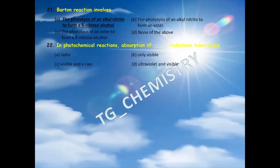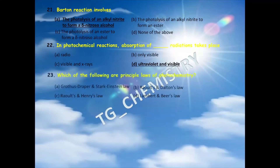Twenty-second question: in photochemical reactions, absorption of which type of radiation takes place? Options: A) radio waves, B) only visible, C) visible and X-rays, D) ultraviolet and visible. The right answer is option D — ultraviolet and visible radiations are involved in photochemical reactions.